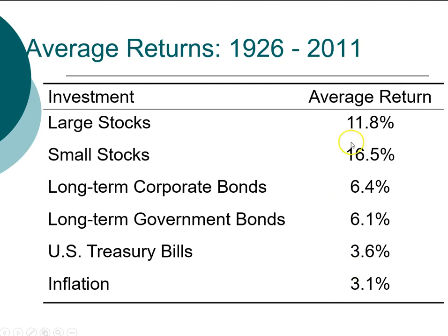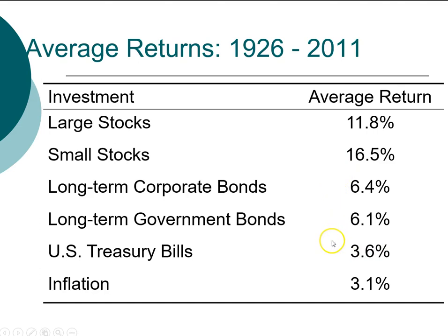The first summary statistic is the arithmetic average. We compute the average return by calculating the return each year for the past 76 years and then averaging those returns. Over the entire time period, the average return per year from investing in large stock is 11.8%, or almost 12%. For small stock it is 16.5%. For corporate bond, government bond, and T-bills — which is the short-term investment of three months to nine months — it is 3.6%. This is consistent with the graph: the highest return is from small stock, followed by large stocks, followed by bonds.